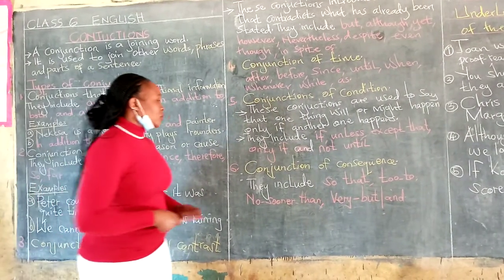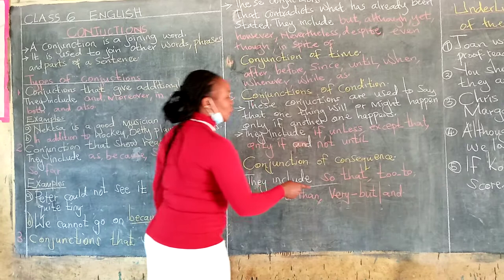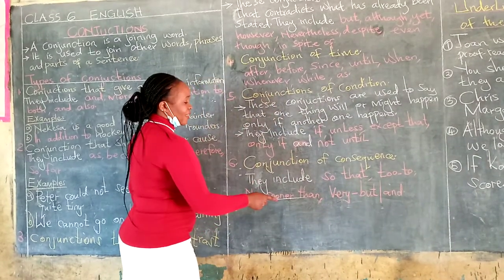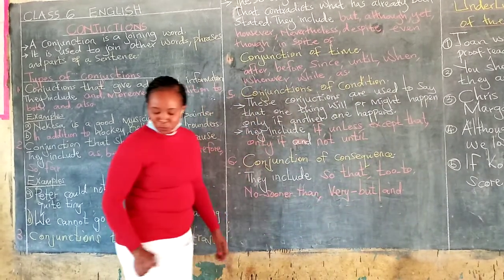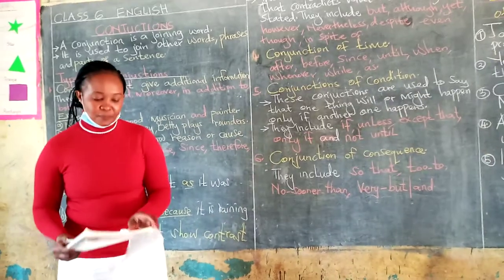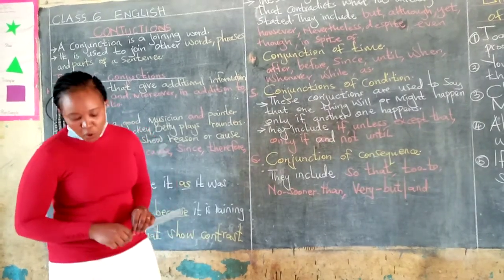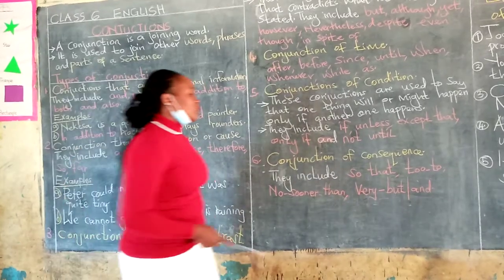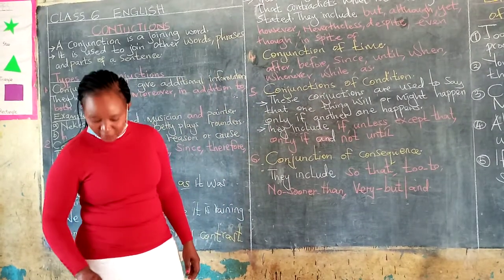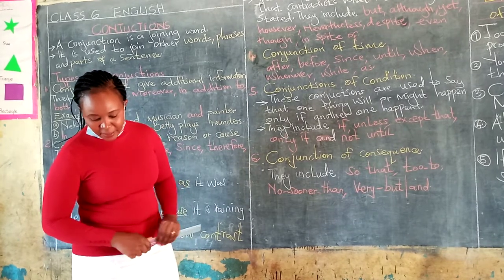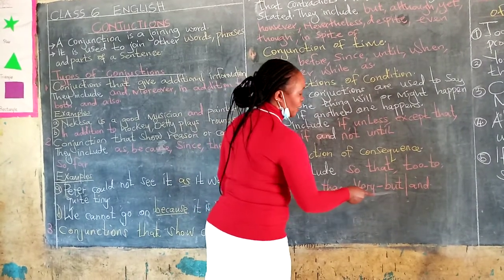The last one, Nana, is conjunctions of consequence. They include: so that, too...to, no sooner than, and very...but or very...and used together. Listen to my sentences. The tea is too hot for the baby to drink — so that is an example of conjunctions of consequence. The girl was very tired, but she went on with the journey.